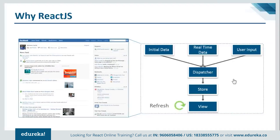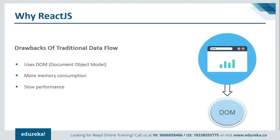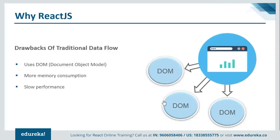If there was a change in data from any source at the back end, in order to reflect those changes on the view, you had to refresh the entire page. This was not user-friendly, and moreover, this traditional data flow had some drawbacks. It used the DOM — Document Object Model — an object created by the browser each time a web page is loaded. The DOM could dynamically add or remove elements, but each time it did that, the browser had to create a new DOM object, leading to more memory consumption and making the application slow.